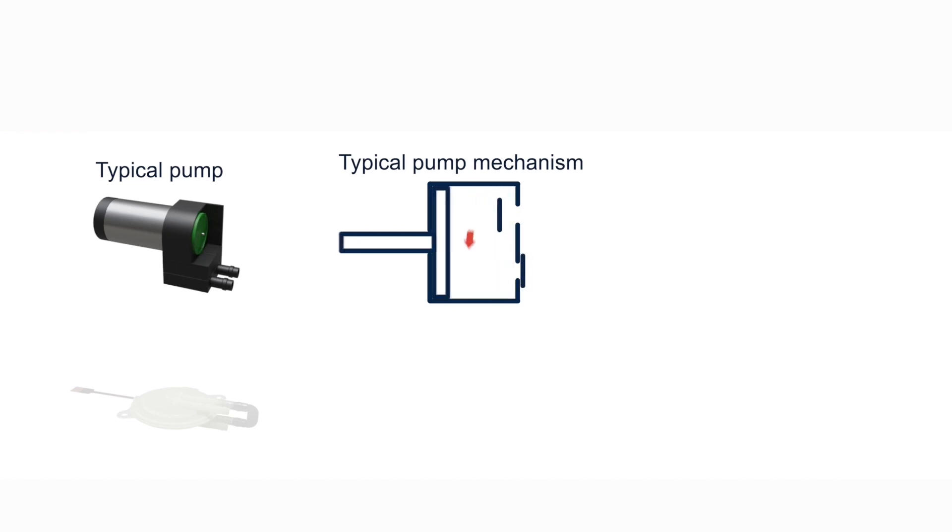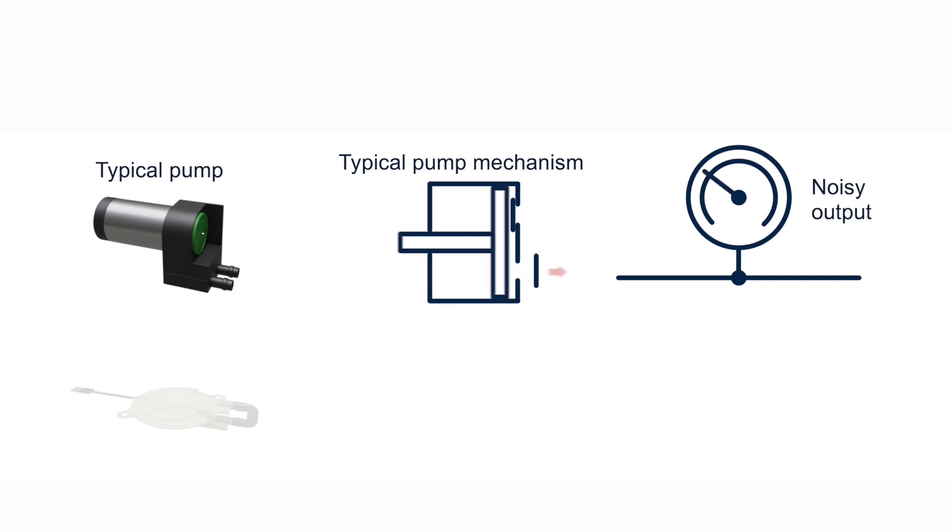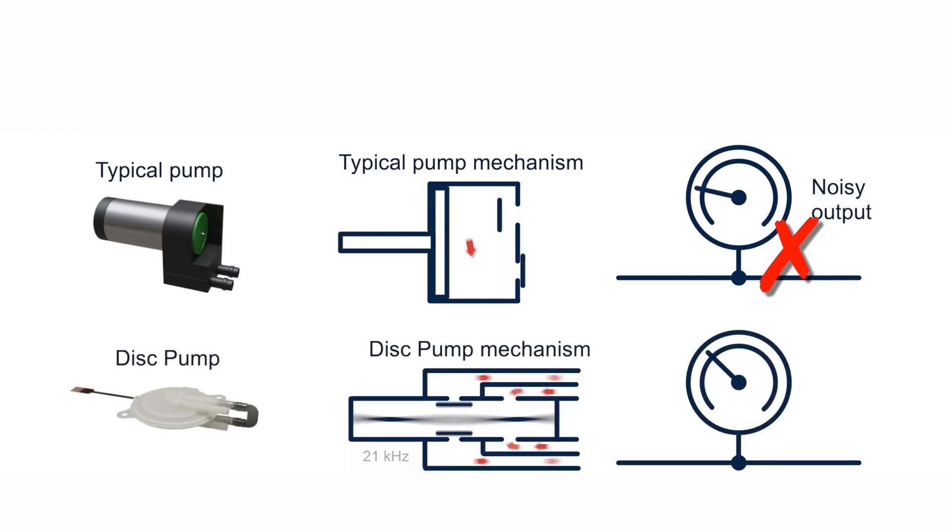The relatively long stroke and limited speed of a motor or solenoid results in a pulsed output that can cause noise on related sensors. The reciprocating motion of the disc pump is much shorter and much faster, resulting in a very smooth output.